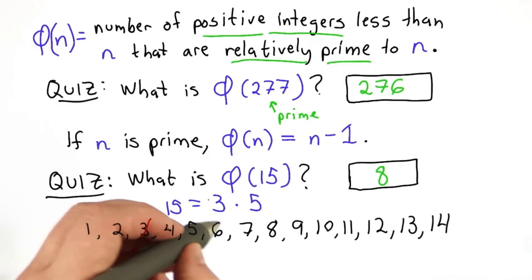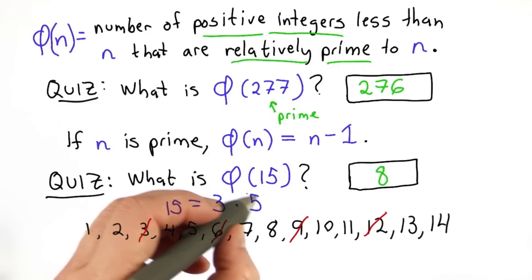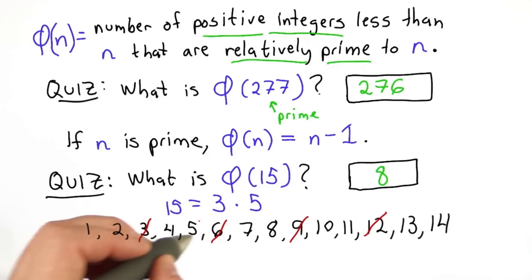The multiples of 3 are not, you can cross all those out. That's true for the multiples of 5 as well. And that leaves us with 8 numbers.